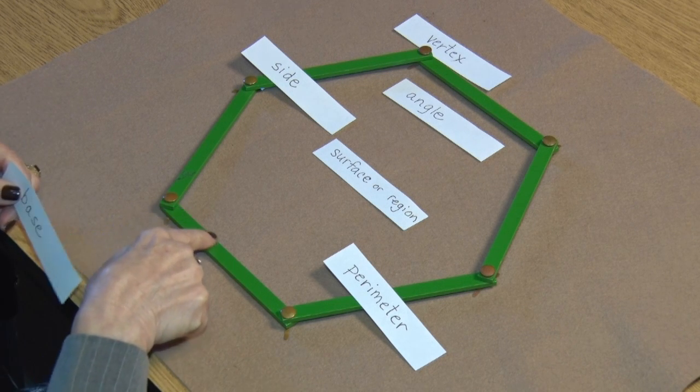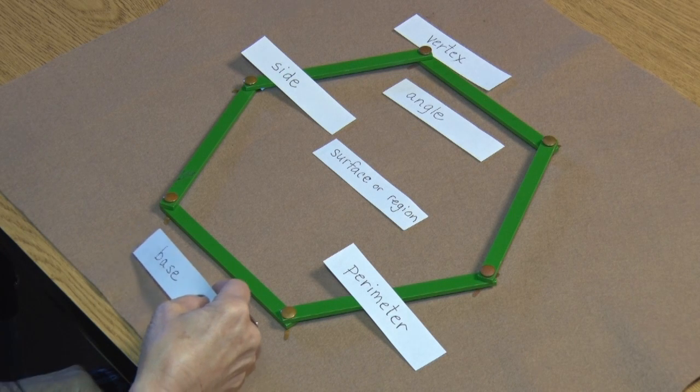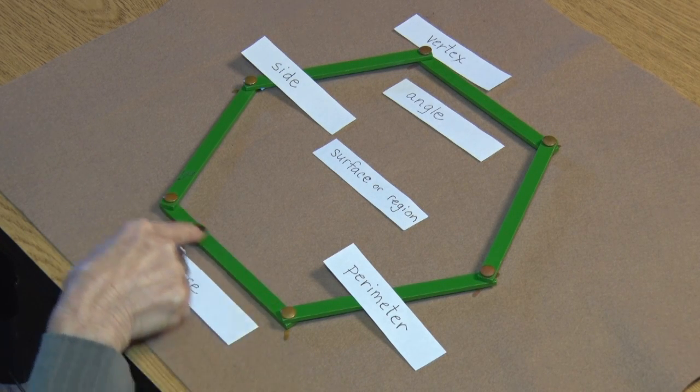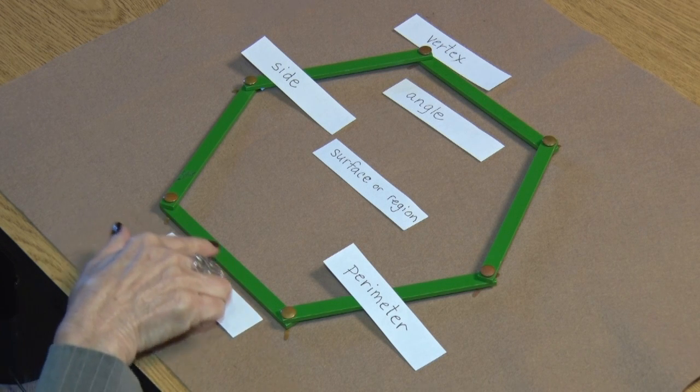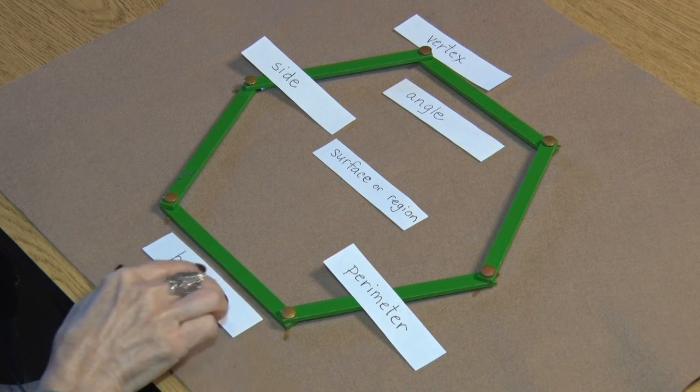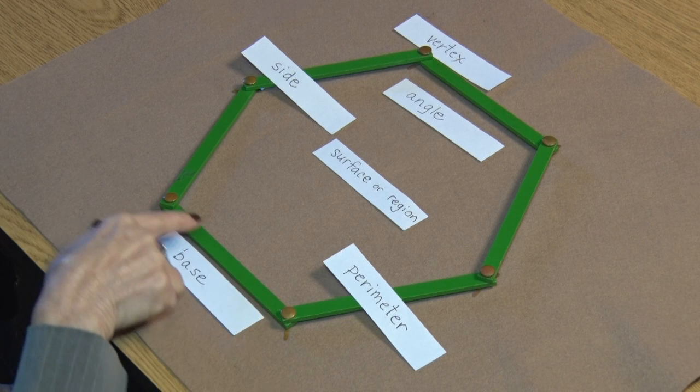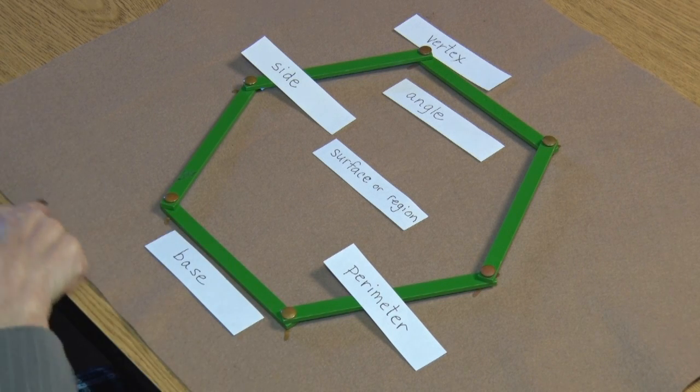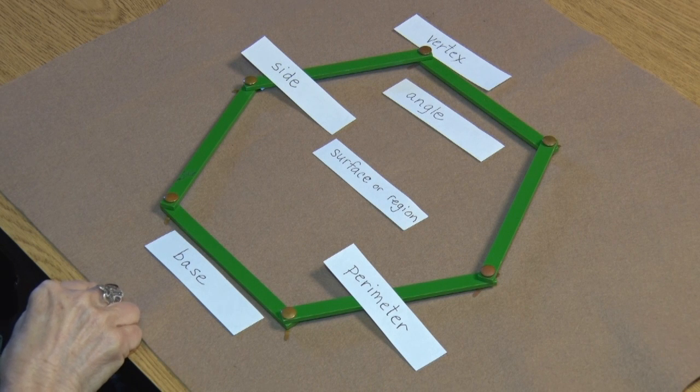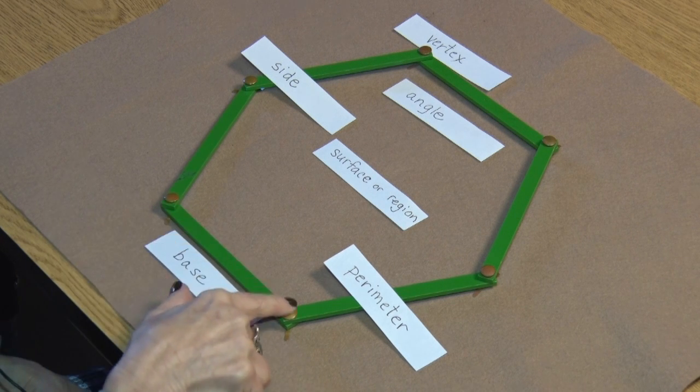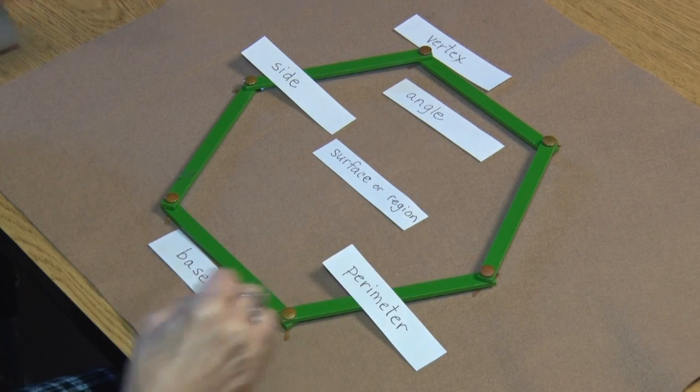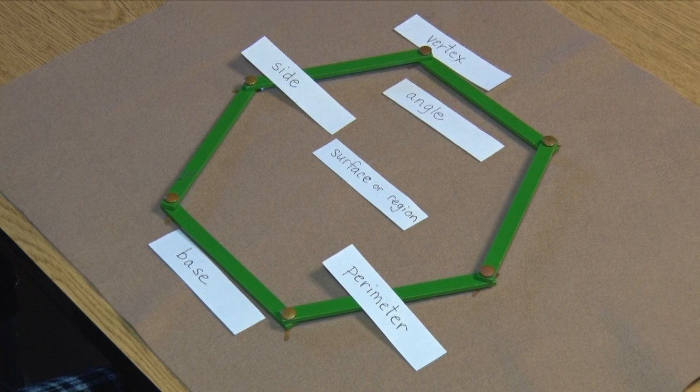We have a special name for the side of a regular polygon on which it sits, on which it rests. This side is called the base. And we like to put a regular polygon on a base that is horizontal, that is parallel to the horizon. So this is the base. But any of these sides could be rotated to become the base of this polygon.